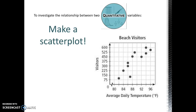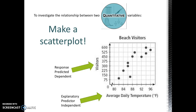The explanatory variable, or the predictor variable, goes on the x-axis. It's called the explanatory variable, and it's also referred to as the predictor variable because we're using the average daily temperature to predict the number of visitors to the beach. We put the response variable, or the predicted variable, on the y-axis.